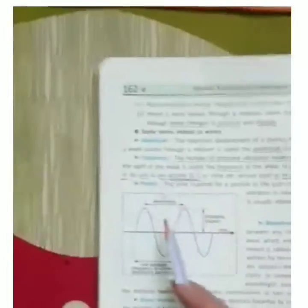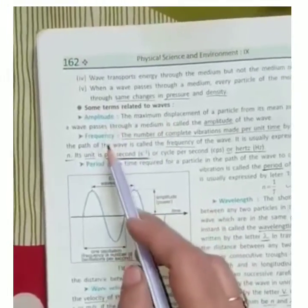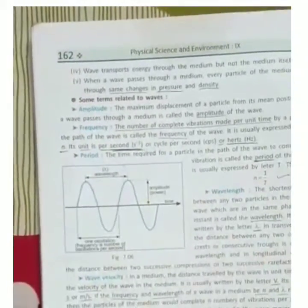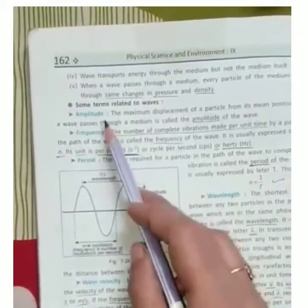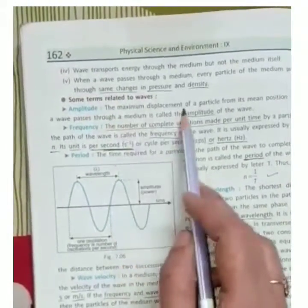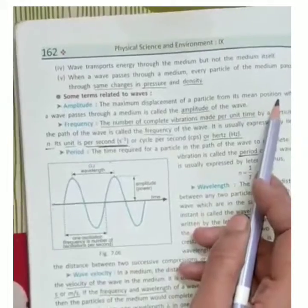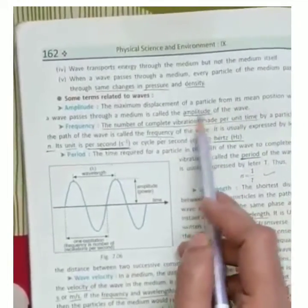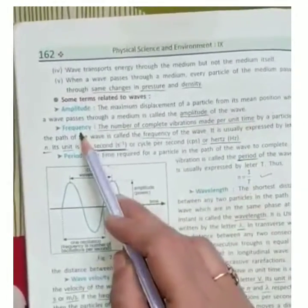Some terms related to waves: amplitude, frequency, period, wavelength and wave velocity. First one is amplitude. What is amplitude? Maximum displacement of particle from mean position, we will call amplitude of the wave.